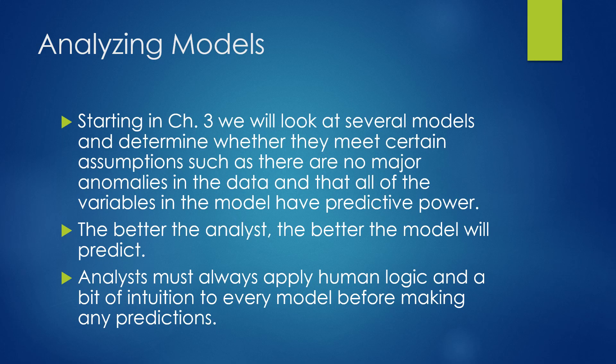When we analyze models — like in Chapter 3 — we'll look at several different models and determine whether they meet certain assumptions. For instance, we don't want any bad outliers or anomalies in the data, and we want all included variables to be good predictors. The better the analyst, the better the model will predict our variables. The analyst must always apply human logic and a bit of intuition to every model before making any predictions.